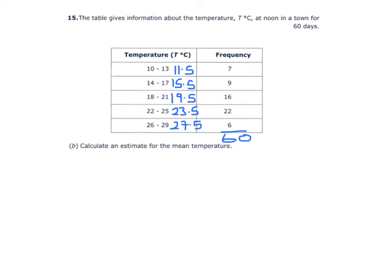To work out the mean, I need to multiply the frequency by the midpoint. So 7 times 11.5, 9 times 15.5, 16 times 19.5, 22 times 23.5, and 6 times 27.5.